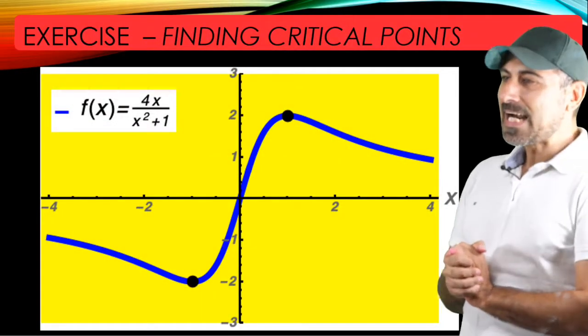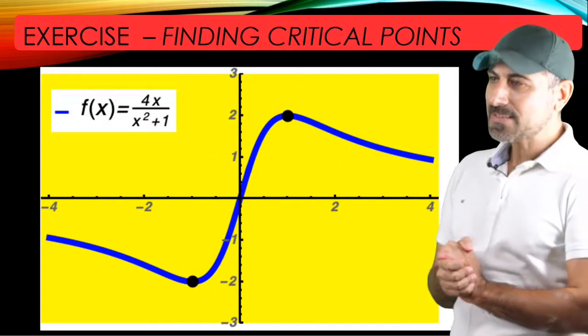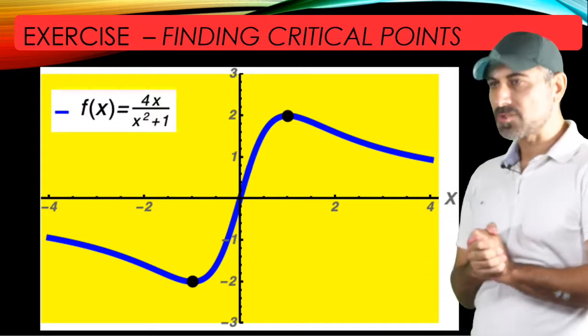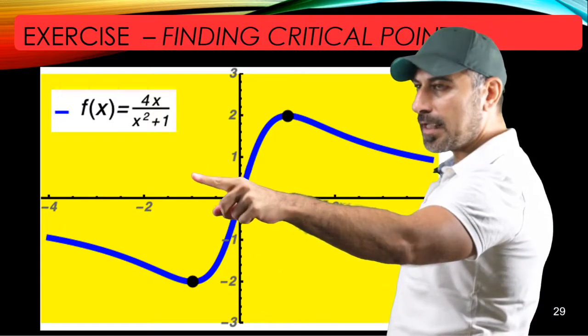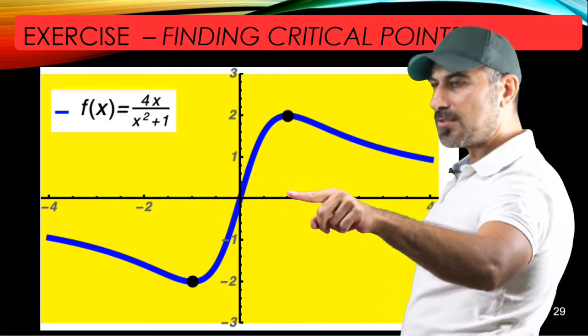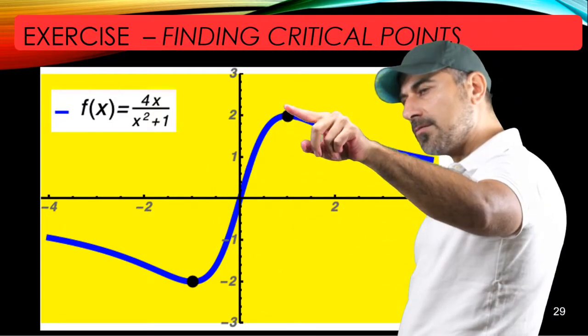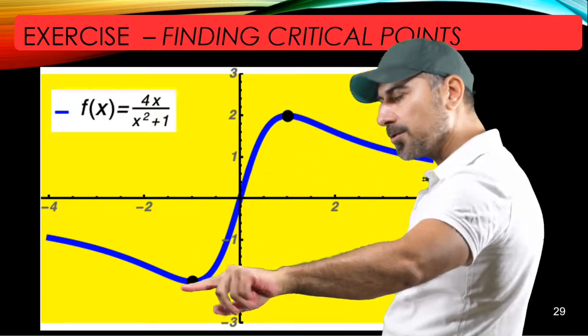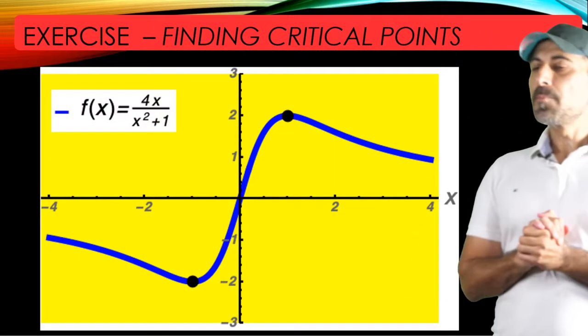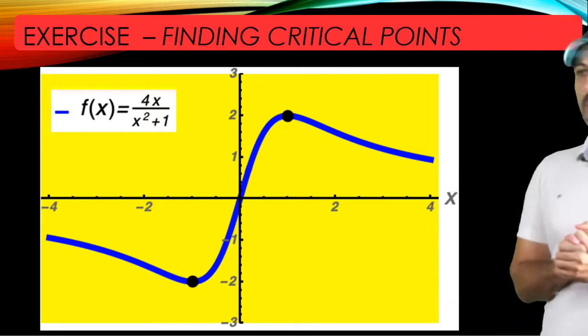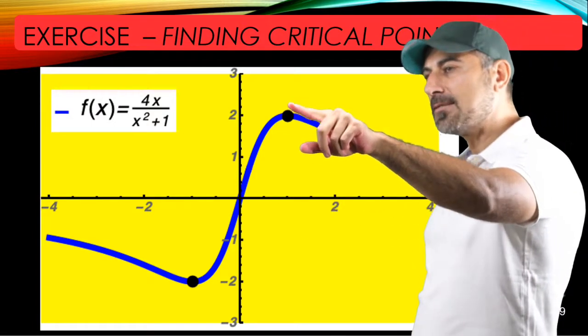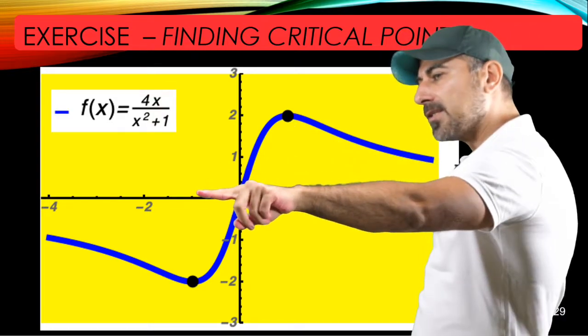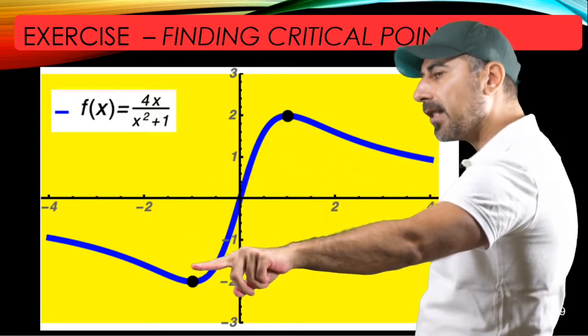Here is a graphical outlook of the function f of x equals 4x over x squared plus 1. We found the critical points to be negative 1 and 1. As you see, these correspond to those dots on the curve. And we know that critical points produce relative extrema. For x equals 1 we have a relative maximum, and for x equals negative 1 you have a relative minimum.